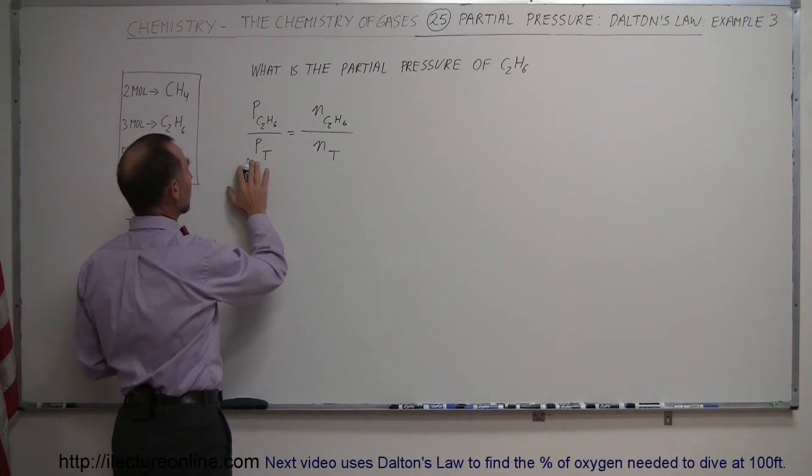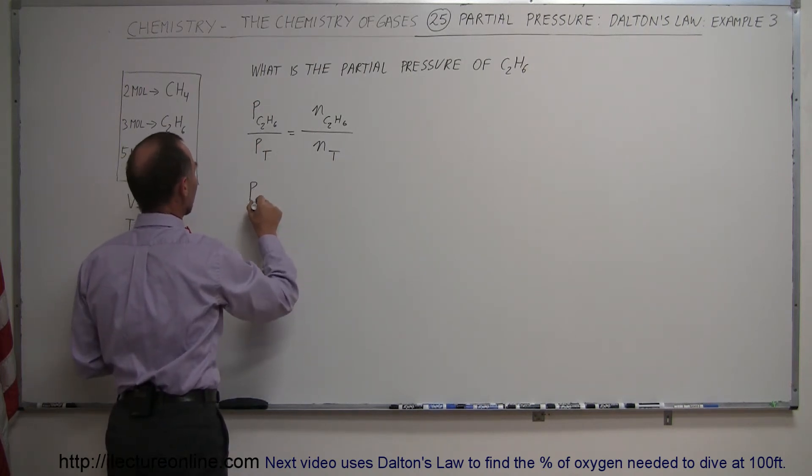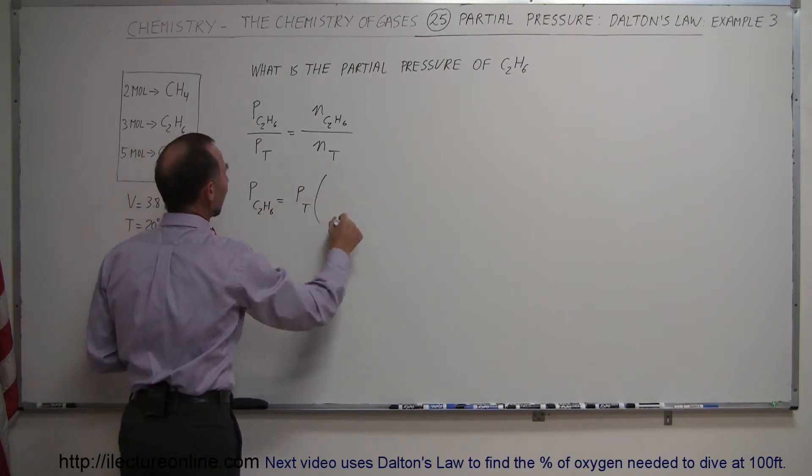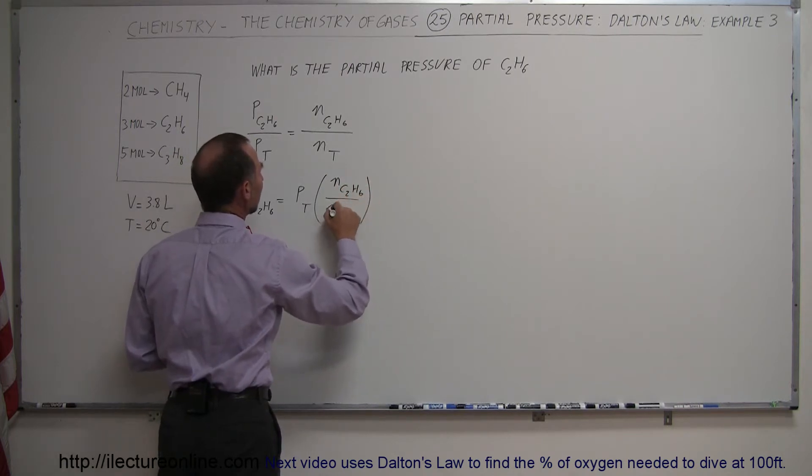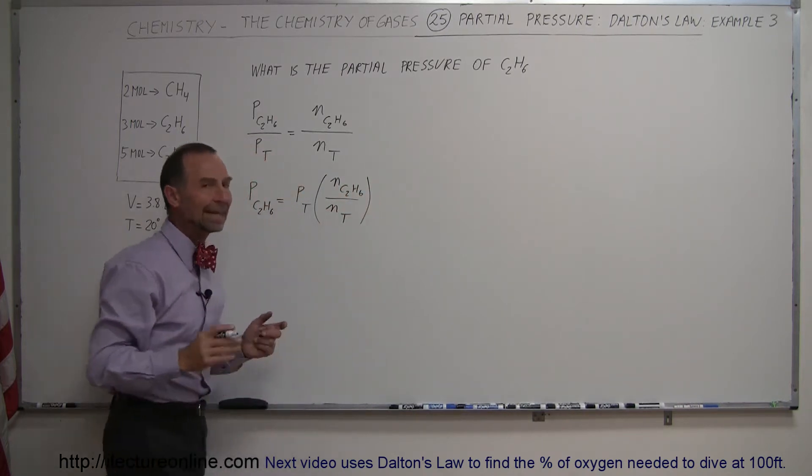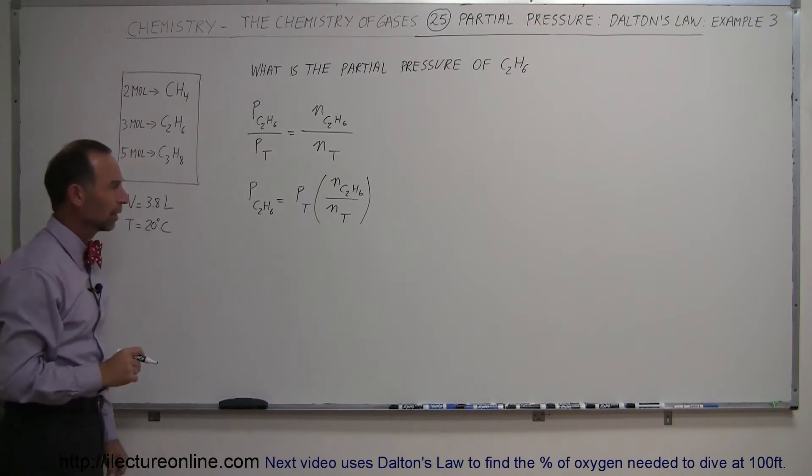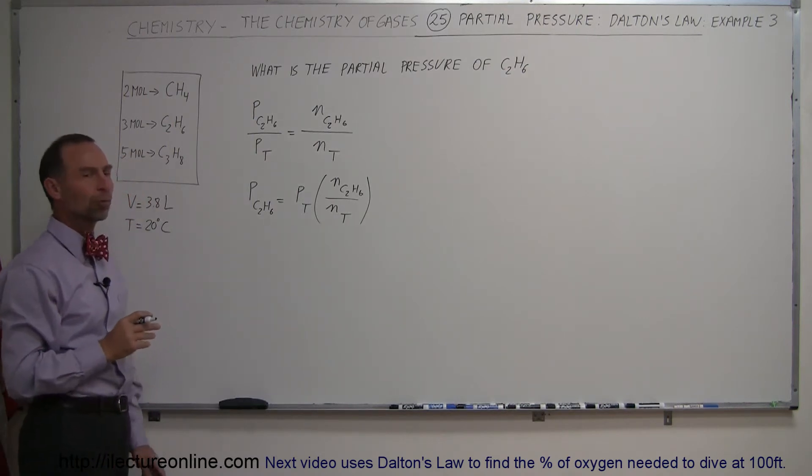If we bring the total pressure over to the right side, we can say that the partial pressure of ethane is equal to the total pressure times the ratio of the number of moles of ethane divided by the total number of moles in the entire mixture. So now we have to find the total pressure.